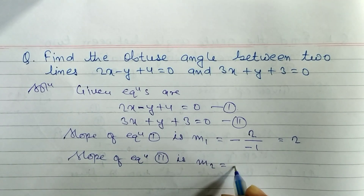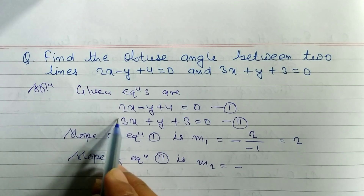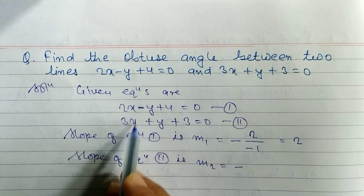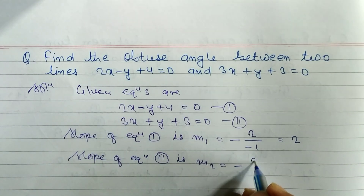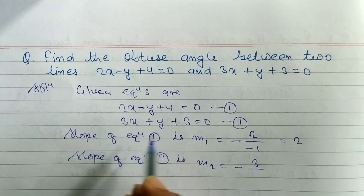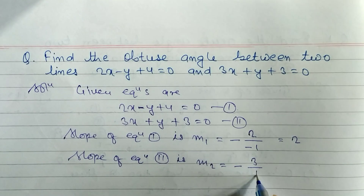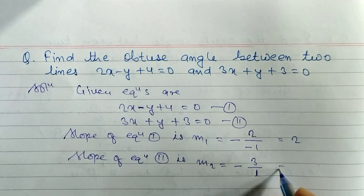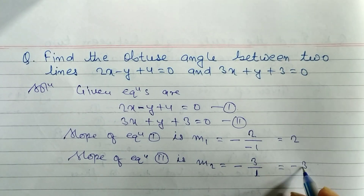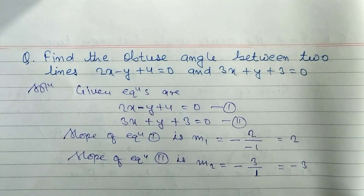Similarly, we find the slope of equation 2, m2. The coefficient of x is 3, and the coefficient of y is 1. So m2 equals minus 3 divided by 1, which gives us minus 3.